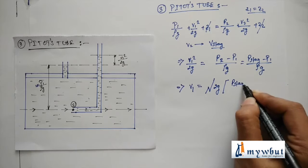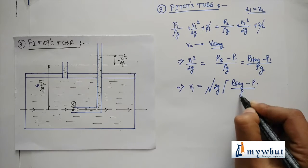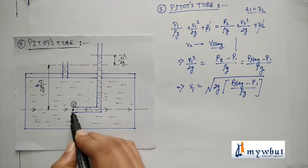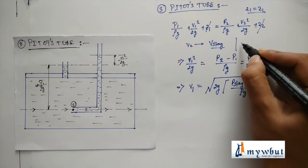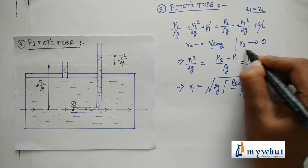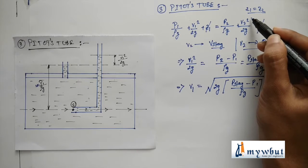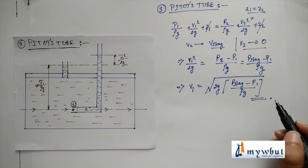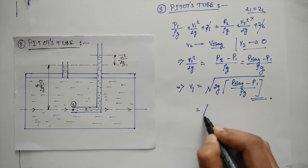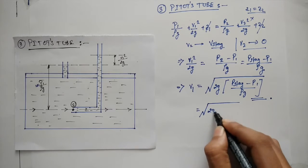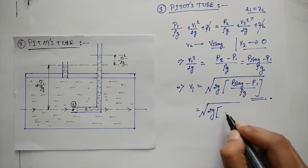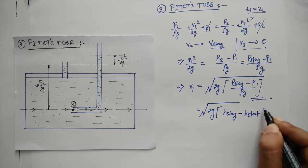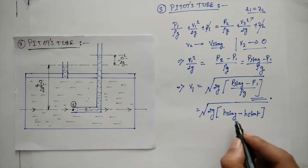Here as velocity at point 2 is 0, we take v₂ to be 0. Hence v₂ also gets cancelled out. So we get this as the equation for pitot's tube. This can also be written as root over 2g into (h stagnation minus h static).